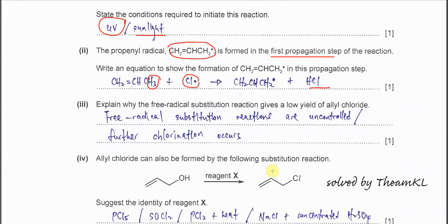Part B(iii). Explain why the free-radical substitution reaction gives a low yield of allyl chloride. The chlorine radicals sometimes will not just target this hydrogen, it can actually target other hydrogens or further substitute. That's why it's uncontrolled because it's random and forms many products.